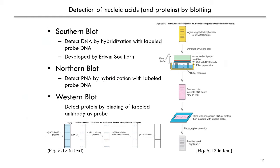There are other analogous methods for detecting other kinds of molecules. Playing on the name of the southern blot is the northern blot — a similar principle, but instead of detecting DNA, you're detecting RNA, so RNA is hybridized with a labeled DNA probe. And along the same lines, you have western blotting. This is not a method for detecting nucleic acids but for detecting proteins. You can run a protein gel and detect protein by binding an antibody, which might be chemically labeled so you can detect where it binds.